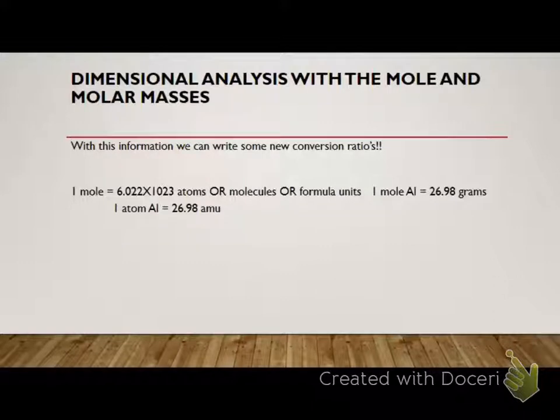So now that we understand from yesterday Avogadro's number, which is the particles, which can be molecules, ions, or atoms or formula units, we can use those as conversion factors. This is actually supposed to be 10 to the 23rd. It's just a typo. And remember that's how many atoms are in a mole or how many molecules or how many formula units, all things that you need to recognize.